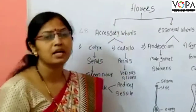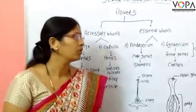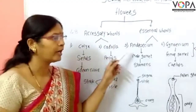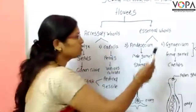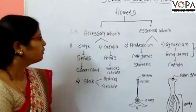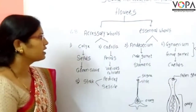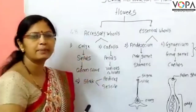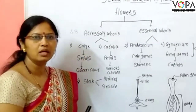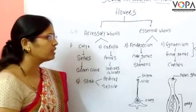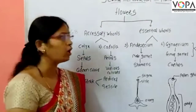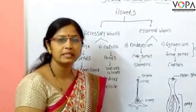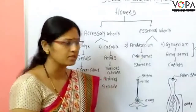Flowers consist of four whorls: calyx, corolla, androecium, and gynoecium. Calyx and corolla are called accessory whorls because they are present in the outer part of the flower. Androecium and gynoecium are called the essential whorls because they are present in the inner side of the flower.